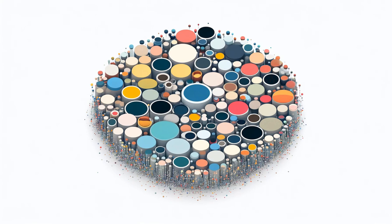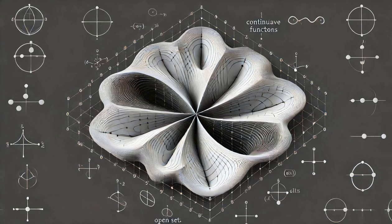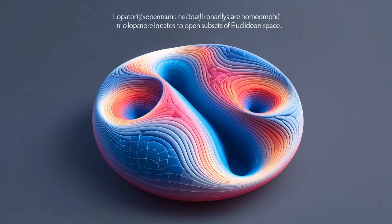Topological Space. A topological space is constructed by defining a set with a topology, which is a collection of open sets that satisfy certain axioms. This framework allows the definition of continuous functions, limits, and convergence, which are necessary for analyzing the properties of spaces.